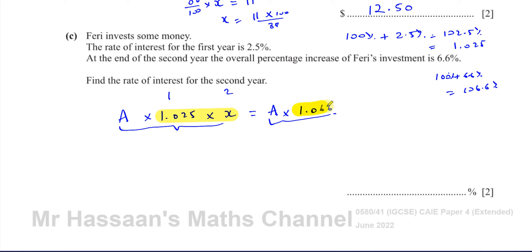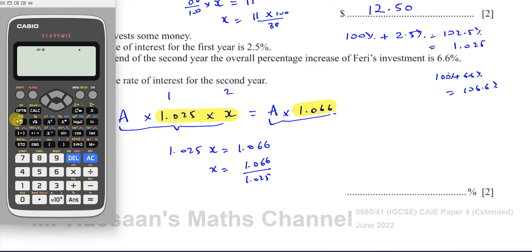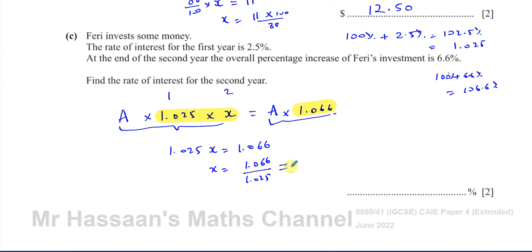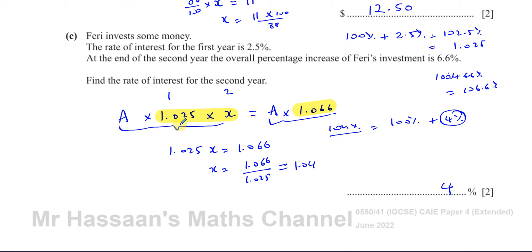From 1.025x = 1.066, we get x = 1.066 ÷ 1.025 = 26/25 = 1.04. This represents 104%, which is 100% + 4%, so the rate of interest for the second year is 4%. To summarise: an increase of 2.5% in year one followed by 4% in year two gives an overall increase of 6.6%.